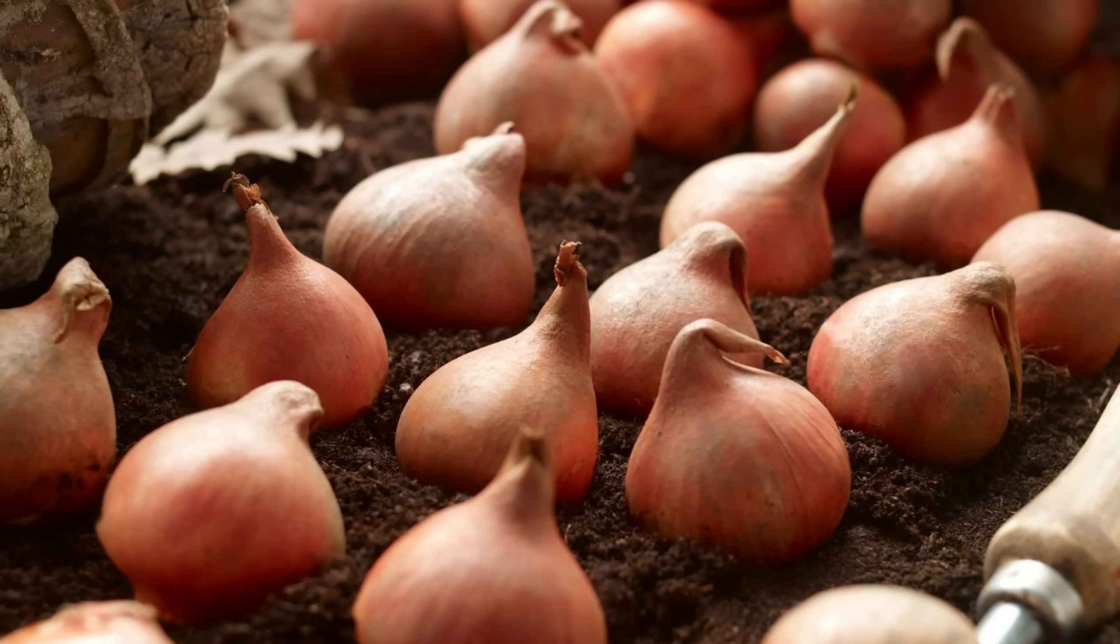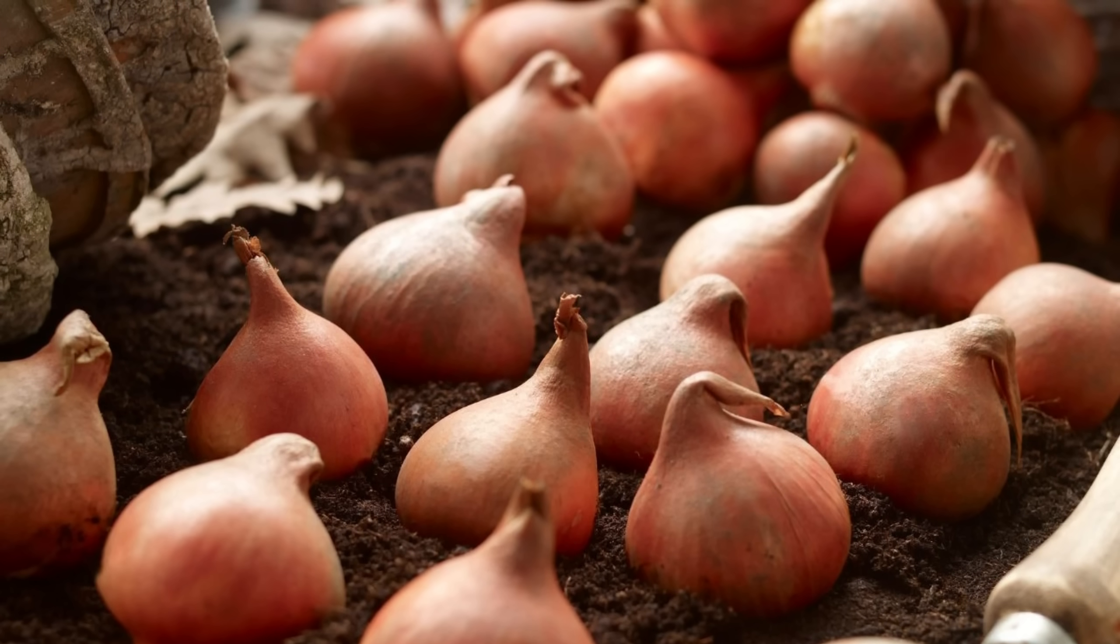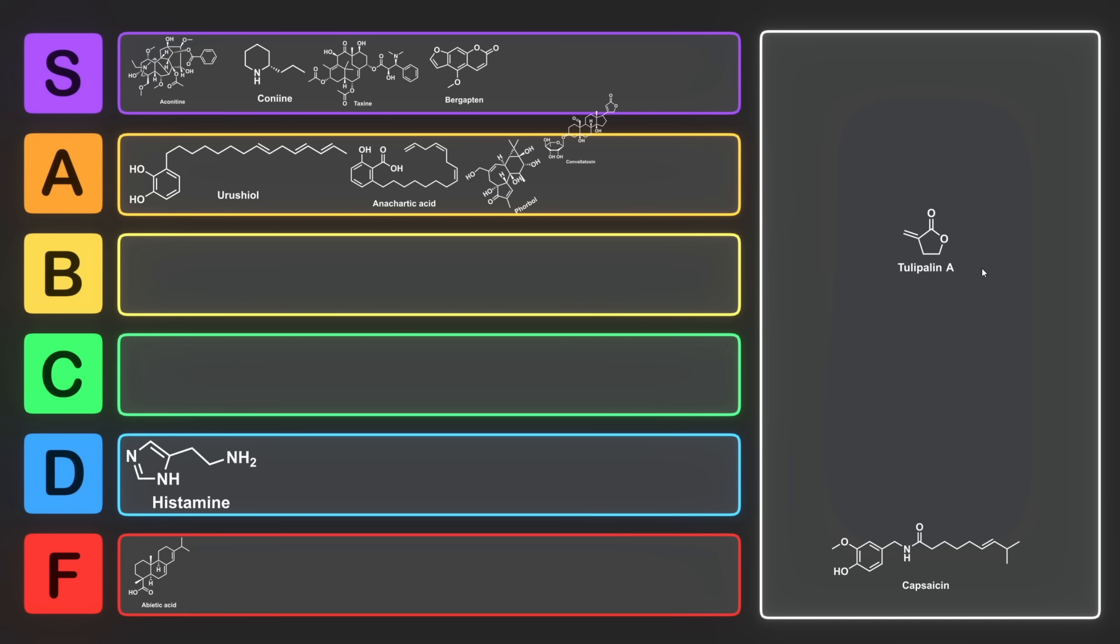Tulip bulbs have also been eaten during times of famine and hunger, but should be generally avoided in the modern era. There is a significant amount of tulipalin A in tulip bulbs, and if consumed, leads to symptoms such as vomiting, sweats, and even heart palpitations. This one doesn't sound like it's going to kill you, but it does still sound pretty irritating, and even though it ends with an A, I think we're going to have to put it into C tier. It's pretty irritating, it can give you heart arrhythmias. That still sounds pretty scary.